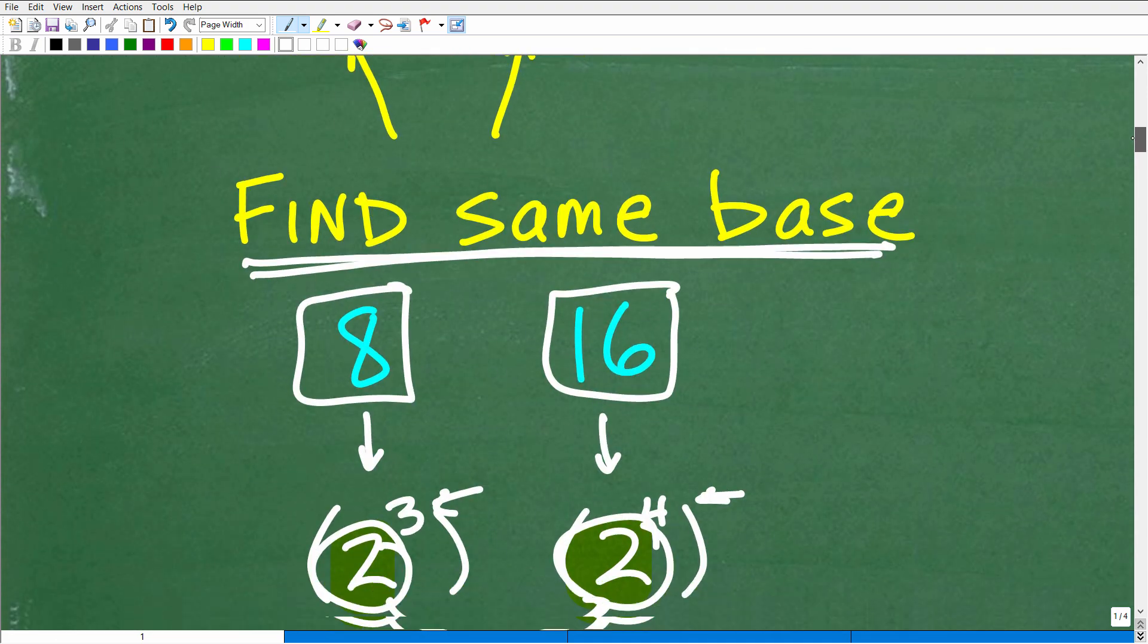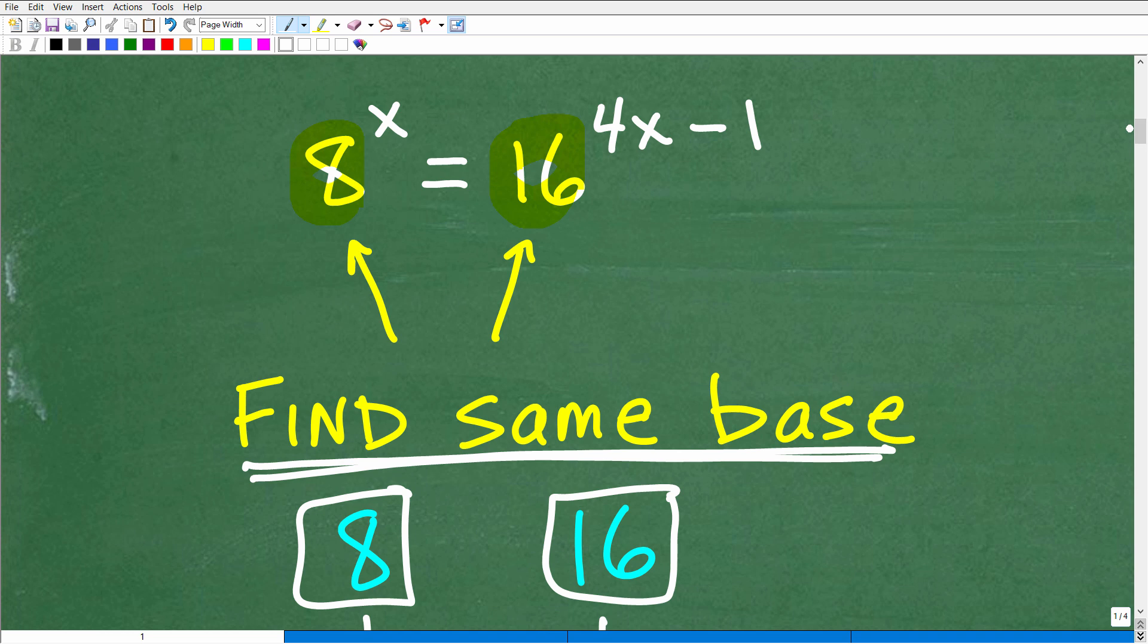These numbers, 8 and 16, because they have a 2 in common, right? So 8, again, was 2 cubed, 16 is 2 to the 4th. But if these values were different, let's just kind of make something up right here. What if I had 2 to the x and this was, let's say, 7 to the 4x minus 1?